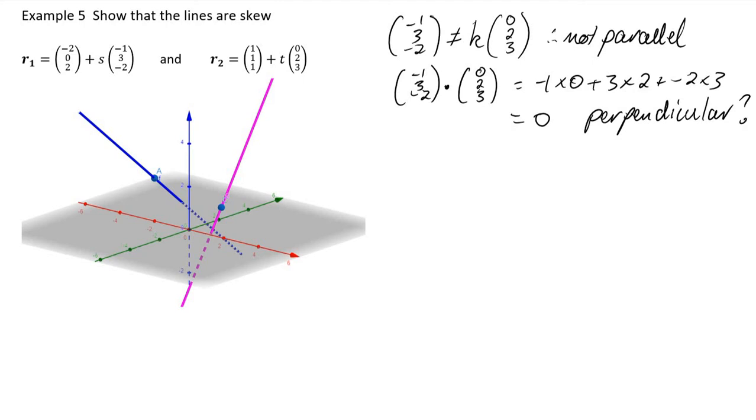We can see from the diagram on screen that they don't intersect. There's no point of intersection, but that's hard to tell without a diagram. So we also have to show this.